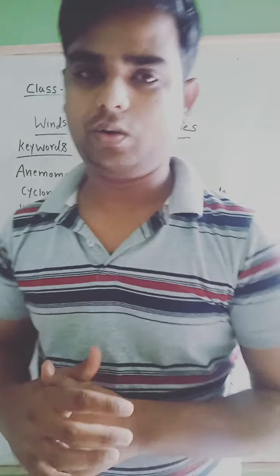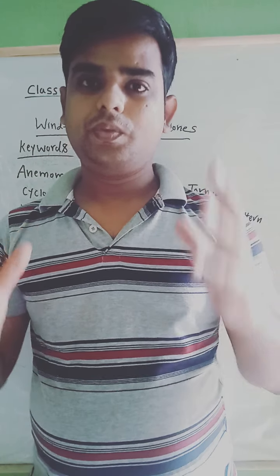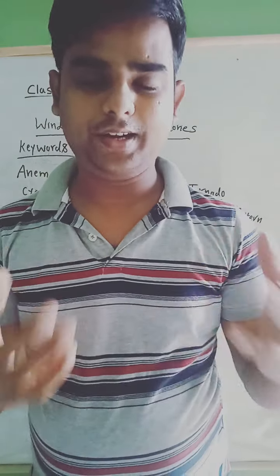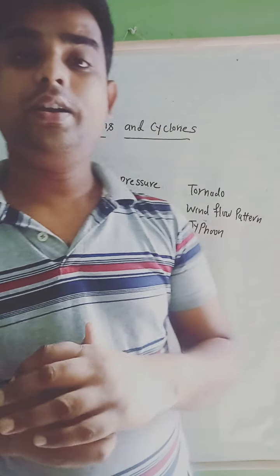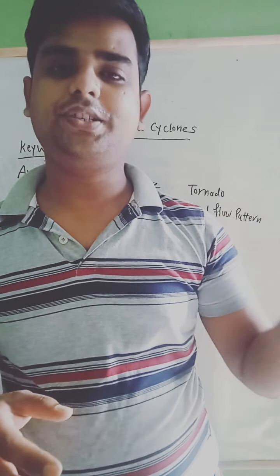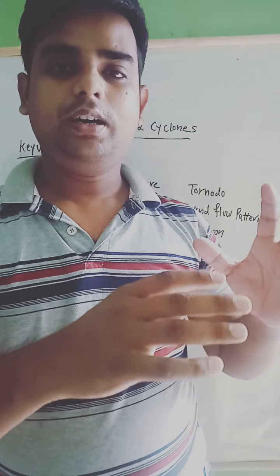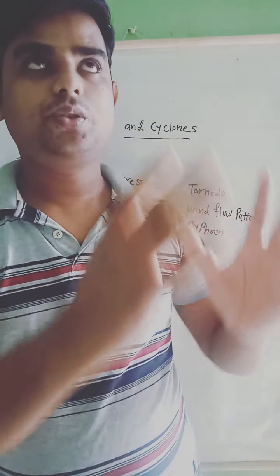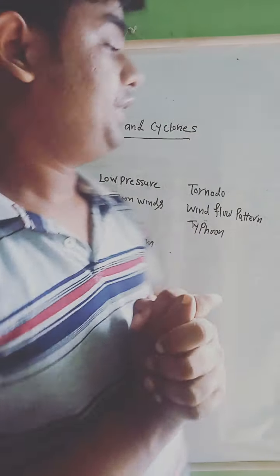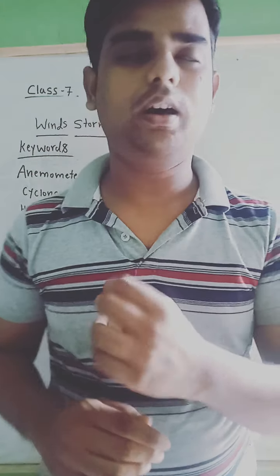Next is tornado. Tornado is a strong storm, a violent storm. It is a violent storm which is due to the speed of winds which appears dark and comes to the ground from clouds in a funnel shape. The speed of winds in tornado is around 300 kilometers per hour.